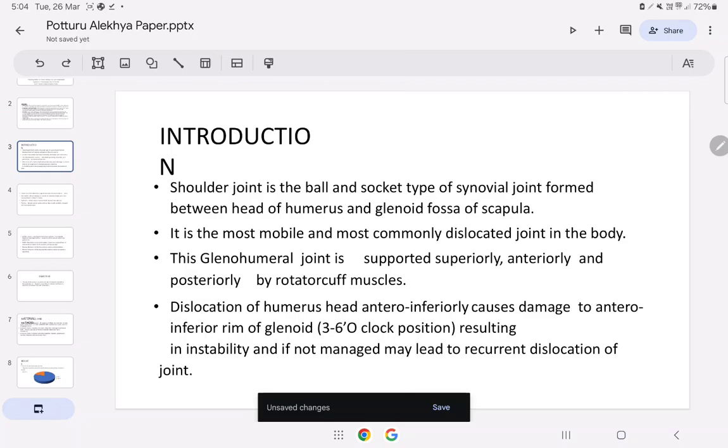This glenohumeral joint is supported superiorly, anteriorly and posteriorly by rotator cuff muscles. Dislocation of humerus head anteroinferiorly causes damage to anterior inferior rim of glenoid resulting in instability and if not managed may lead to recurrent dislocation of joint.